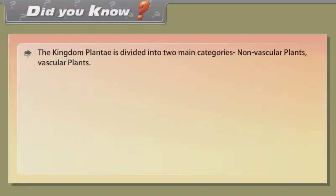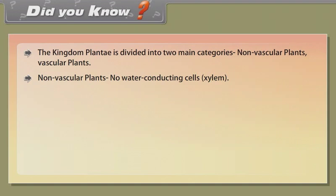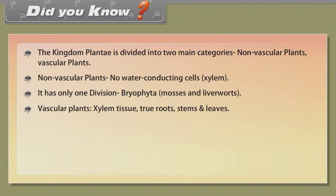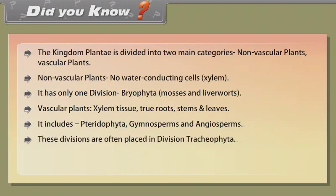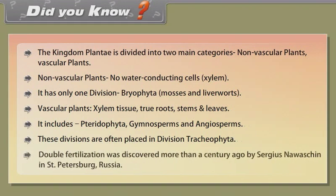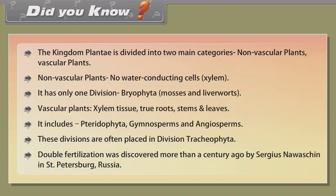Did You Know: The Kingdom Plantae is divided into two main categories, non-vascular plants and vascular plants. Non-vascular plants have no water-conducting cells or xylem and have only one division, Bryophyta including mosses and liverworts. Vascular plants have xylem tissue, true roots, stems and leaves. It includes Pteridophyta, Gymnosperms and Angiosperms. These divisions are often placed in division Tracheophyta. Double fertilization was discovered more than a century ago by Sergius Nawaschin in St. Petersburg, Russia.